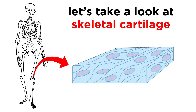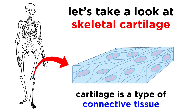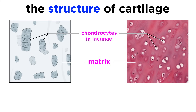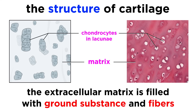Before diving into the bones that we are familiar with, let's start with the bits of skeletal cartilage that can be found in various regions of the skeleton. We already learned about cartilage when we discussed connective tissue, but let's recall a few points. First, it contains a lot of water, which gives it the ability to withstand tension and compression. Cartilage contains cells called chondrocytes, which sit in cavities called lacunae, inside of an extracellular matrix filled with ground substance and fibers.